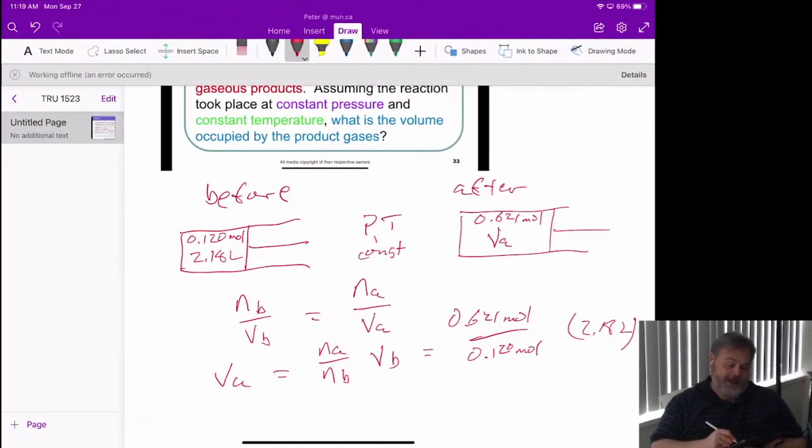We now have 5.18 times as much gas as we started with. And therefore, the volume is going to have to be 5.18 times bigger.